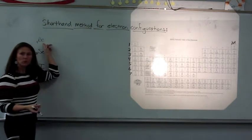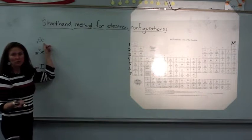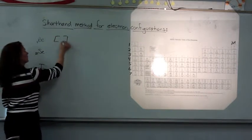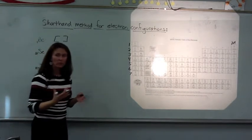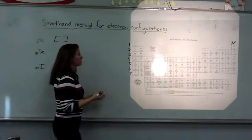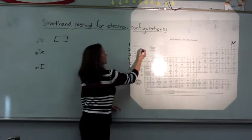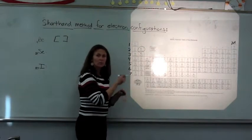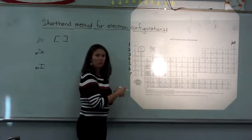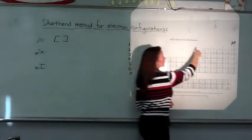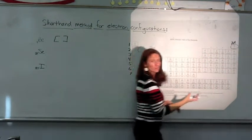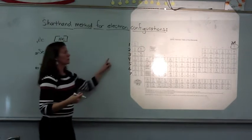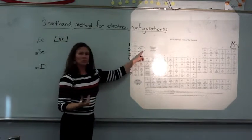For beryllium — it has 4 protons and 4 electrons because the atomic number is 4. The noble gas we're going to use for our shorthand version is previous to beryllium in the previous row, which is helium. So I'll put helium in brackets, and then do an additional 2s2.